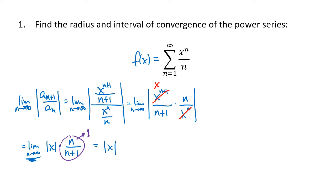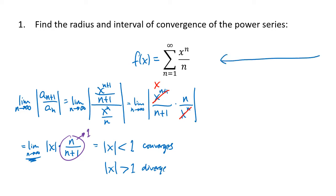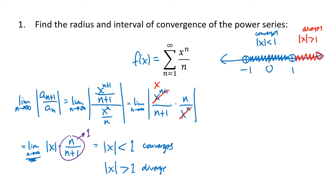When using the ratio test, if the result of the limit is less than 1, the series converges, and if the absolute value of x is greater than 1, the series diverges. On the number line, we're centered at 0, going to negative 1 and positive 1. The numbers between +1 and -1 are the values where the absolute value of x is less than 1, so our series converges there. To the right of 1 or to the left of negative 1, the absolute value of x is greater than 1 and the series diverges.